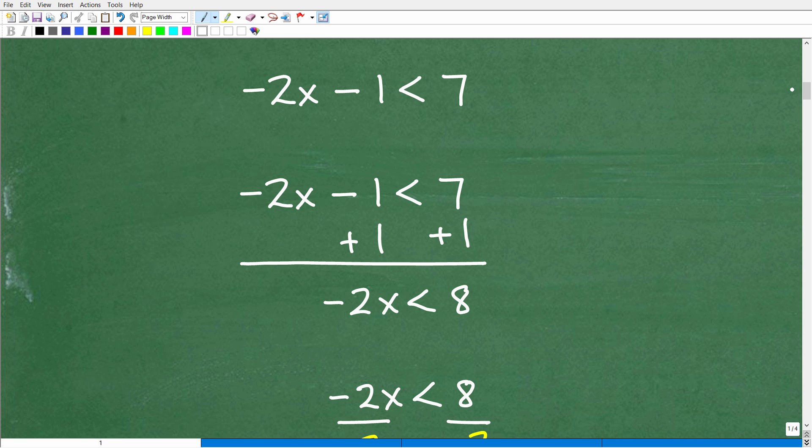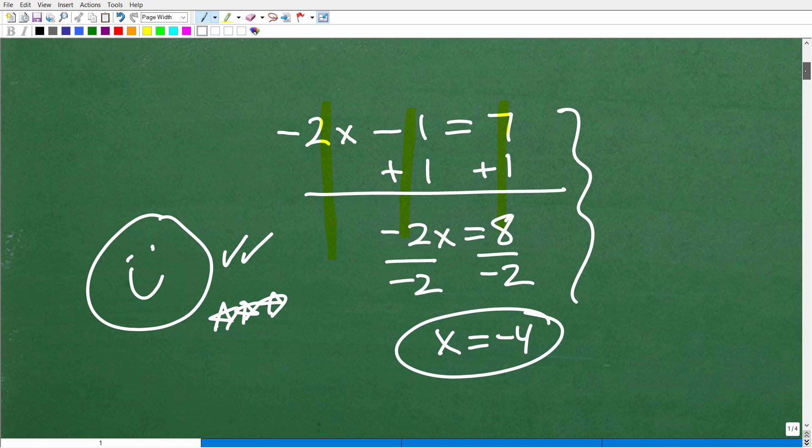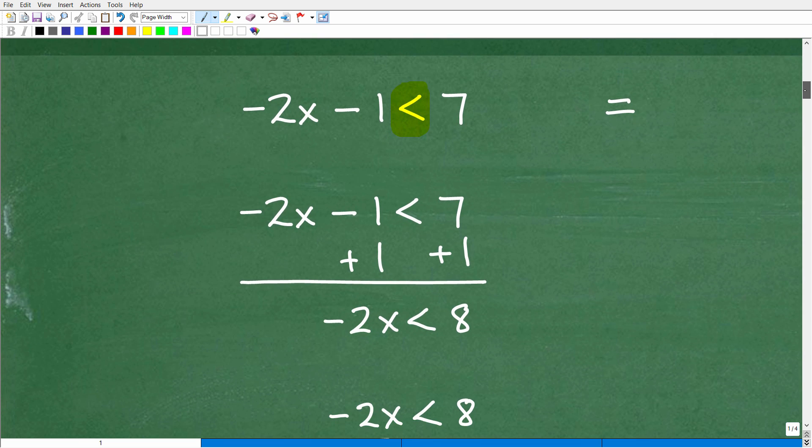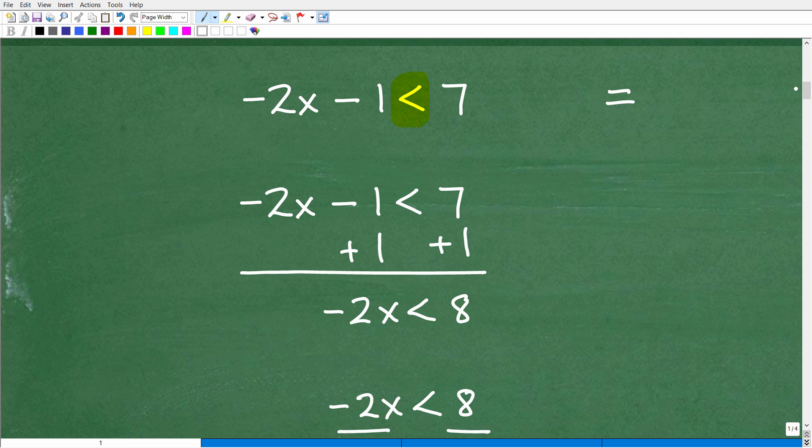All right. So what we're going to do is we're going to kind of think of our little inequality symbol temporarily in our brain as an equal symbol. We're kind of going to treat it as an equal symbol. We're going to follow the same steps that we just did right over here. However, we've got to be paying attention because there are some things that affect the way this problem turns out.